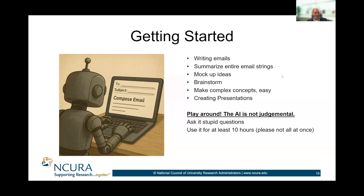It's also very good at summarizing emails. Especially if you're on an email thread with 20 previous emails and you're just coming into it — it takes forever to read through the whole string and get context. You can cut and paste it in, or if you've got Copilot for Office 365, there's a button that says 'summarize this' and it will give you the key points and what you're supposed to do.